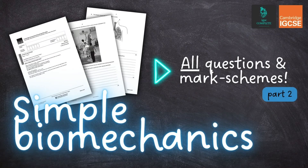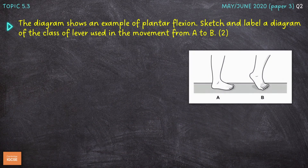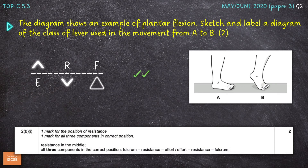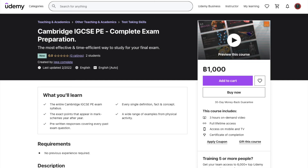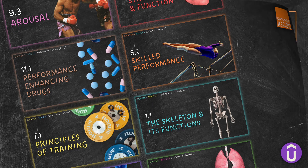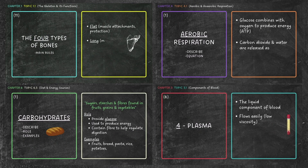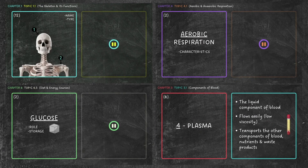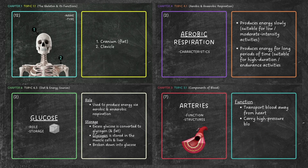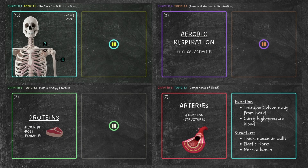Hello and welcome to another complete Cambridge IGCSE PE lesson. In this video, we'll break down and simplify 12 recent past exam questions on Chapter 5, Simple Biomechanics. If you benefit from this video, consider subscribing to the channel, give the video a thumbs up, and check out the complete exam preparation course on Udemy, which contains everything you need to excel in your IGCSE exam. The 53 individual flashcard videos provide mark scheme responses to any question that could be asked and allow you to revise in an extremely short period of time. Check the link in the description to find out more.